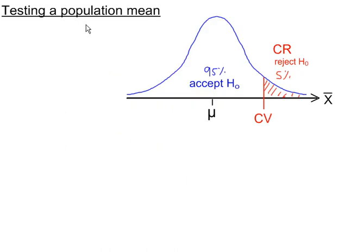In this example, we're testing a population mean using a normal distribution, so we have a continuous variable. The significance level is 5%. This is our rejection region, which can be used to calculate the probability of type 1 errors, and the size of this acceptance region can be used to calculate the probability of type 2 errors.